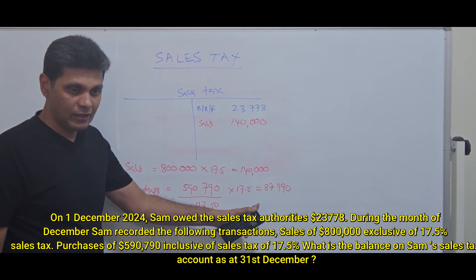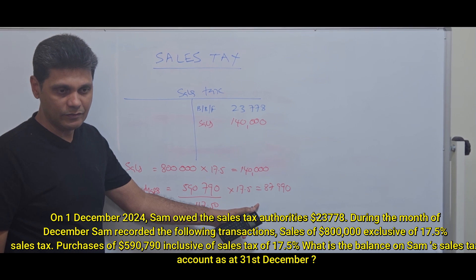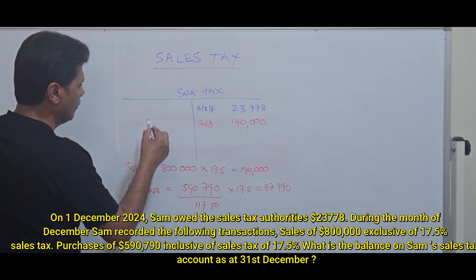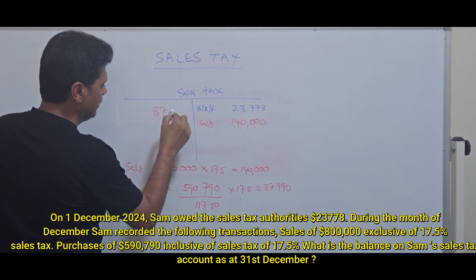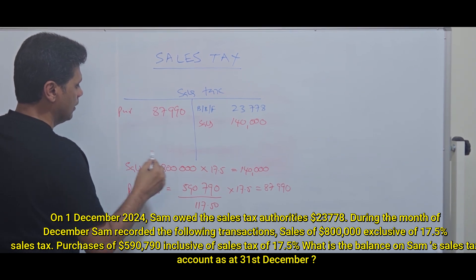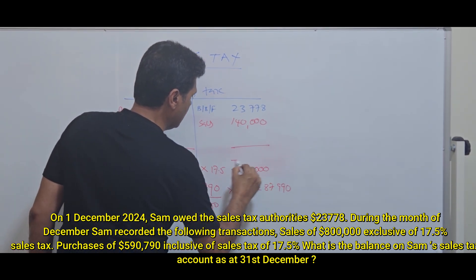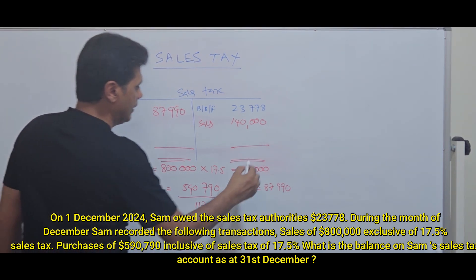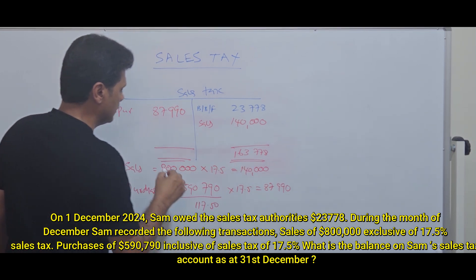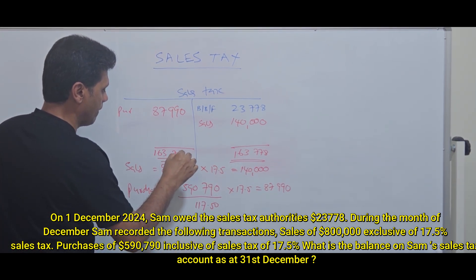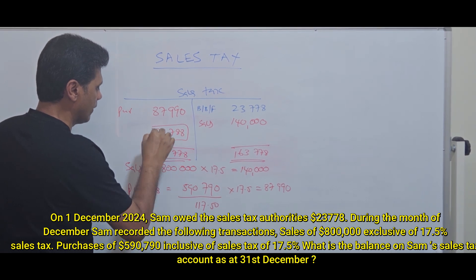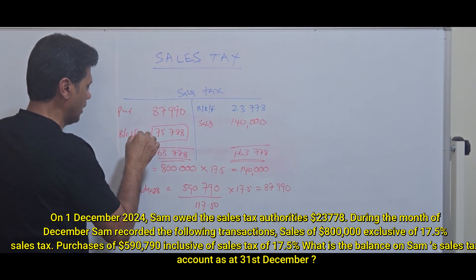This $87,990 can be recovered — it will be refunded. A refundable amount is a receivable. So for the sales tax account, you debit $87,990 on purchases.